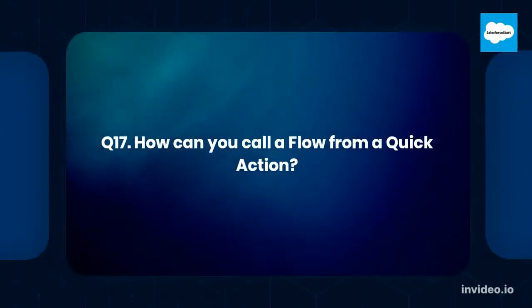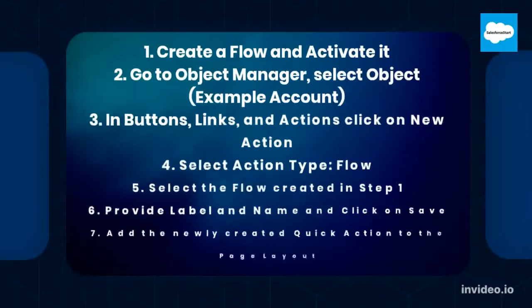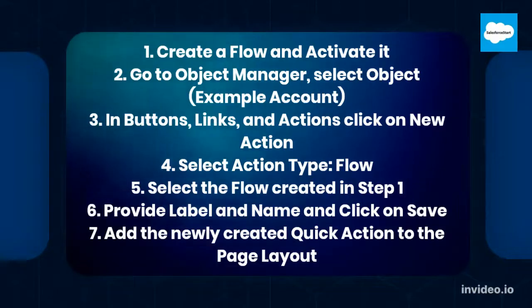Question number 17: How can you call a Flow from a quick action? Answer: 1. Create a Flow and activate it. 2. Go to Object Manager, select an Object, for example Account. 3. In Buttons, Links, and Actions, click on New Action.